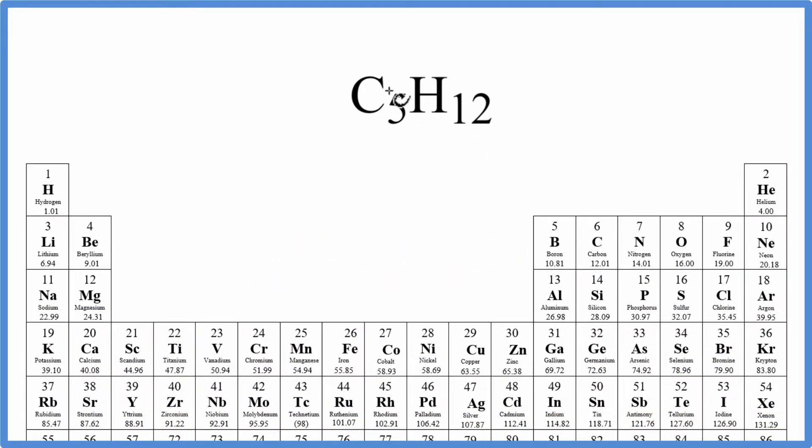So we'll go to the periodic table and look up the atomic mass for each element. Carbon, that's 12.01 grams per mole. I won't write grams per mole until we're done with our calculations. Hydrogen, 1.01 grams per mole.